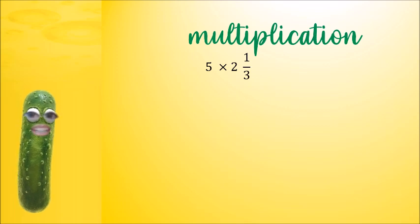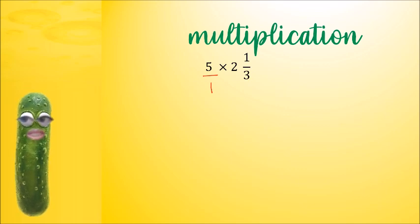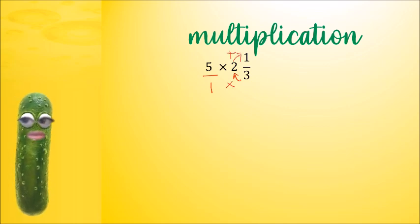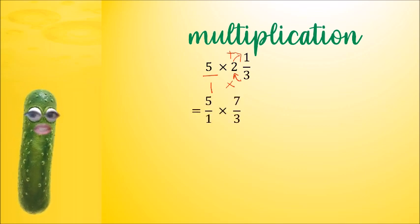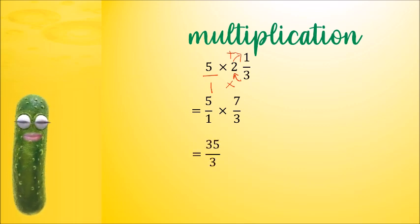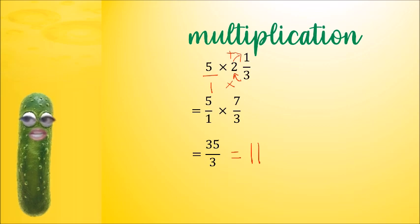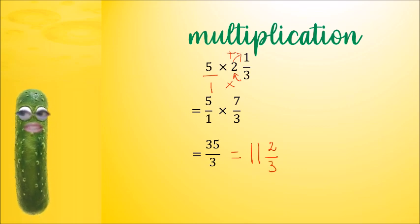What about mixed numbers? How do we multiply fractions with mixed numbers in them? We know from previous lessons that we can convert them into improper fractions. So 5 wholes is the same as 5 over 1. And we can go 3 times 2 is 6 plus 1 is 7 — so 3 times 2 plus 1 is 7 over 3. Then we multiply across just like before. There's nothing on the top and bottom to simplify, so 5 times 7 is 35 and 1 times 3 is 3. Then we can convert back to a mixed number: how many 3s fit into 35? 11, because 11 times 3 is 33 — remainder 2. So our answer is 11 and 2 thirds.